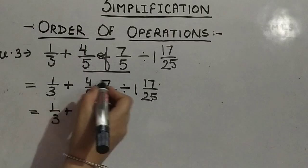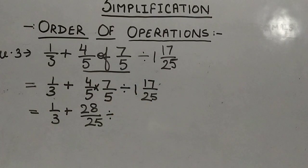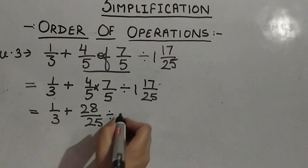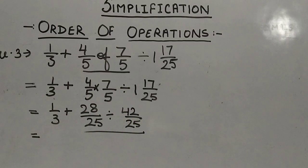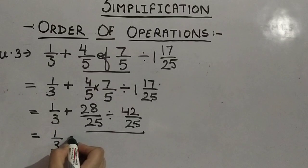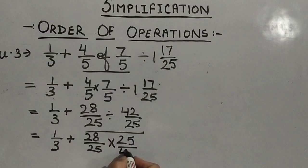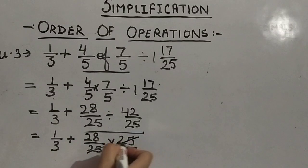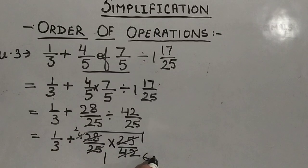First we solve the multiplication from 'of': 4/5 × 7/5 = 28/25. So we have 1/3 + 28/25 ÷ 1 whole 17/25. Convert 1 whole 17/25 to an improper fraction: 25 + 17 = 42, so it becomes 42/25. Now for division, we replace the division sign with multiplication and take the reciprocal of 42/25 which is 25/42. So: 1/3 + 28/25 × 25/42. Simplify: 25 cancels, 28 and 42 simplify to 2 and 3, giving 1/3 + 2/3.